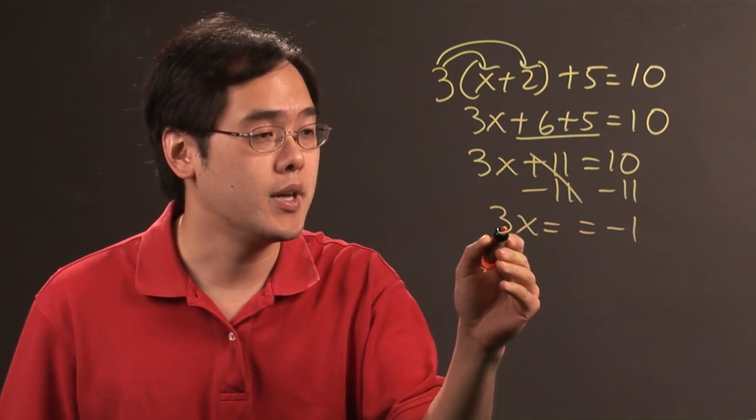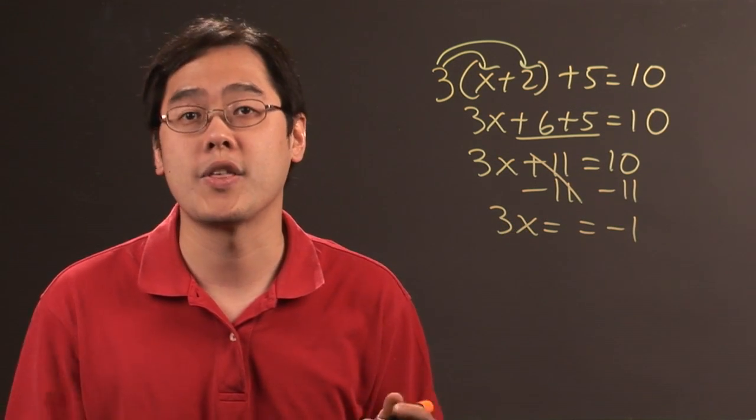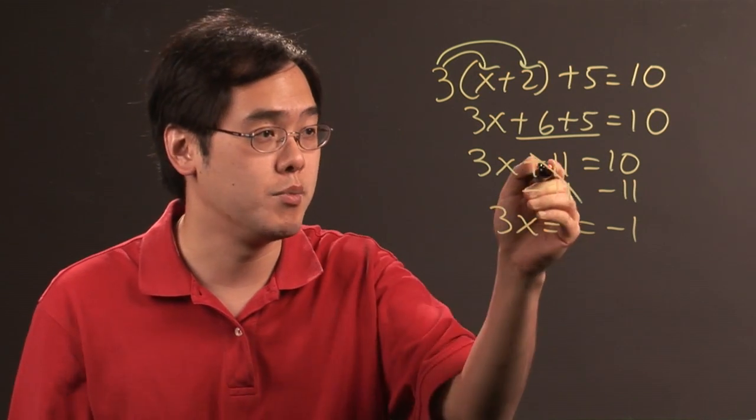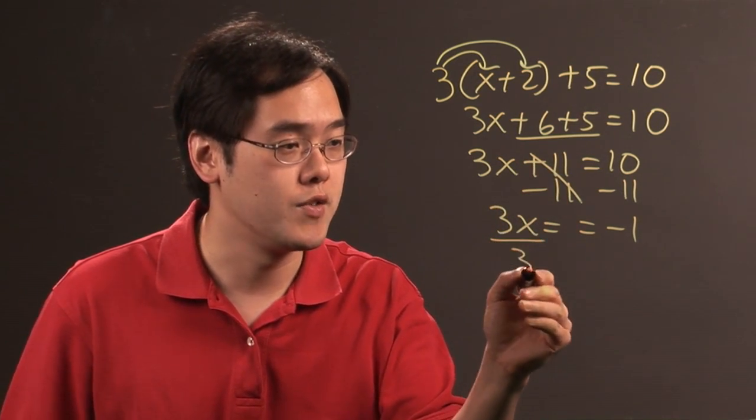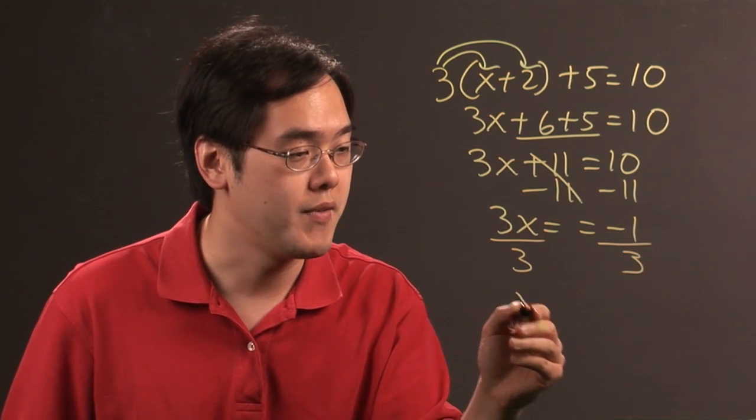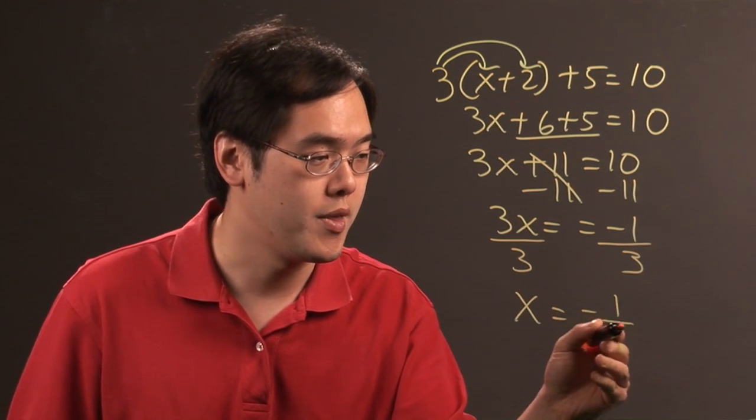To solve for x completely, because 3 is multiplied with x, you want to think about the opposite operation, which is division. So if we divide both sides by 3, you have x equals negative one-third.